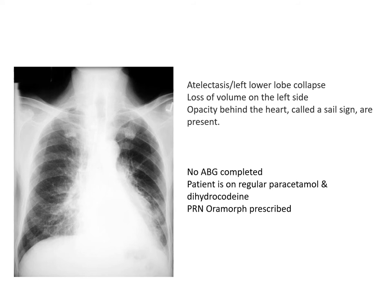We've obtained a chest X-ray and from this there appears to be something going on at the left lower lobe. We can't quite make out the left hemidiaphragm, and we've lost the cardiogenic and costophrenic angle on that side. There's probably some left lower lobe collapse — a dense opacity sitting behind the heart and what looks like the start of a sail sign, with a straight line and a double line with the heart border, which is a classic sign of left lower lobe collapse. The patient has no ABG available. They've been on regular paracetamol and dihydrocodeine but are written up for PRN Oramorph, which we've requested before starting treatment.